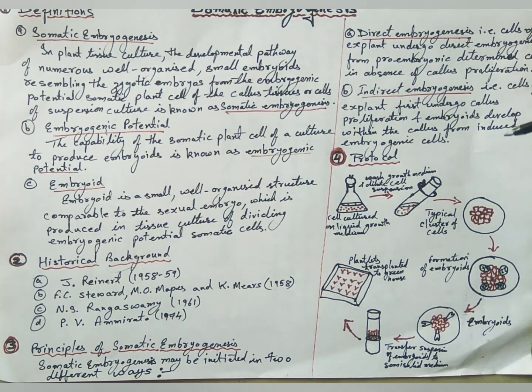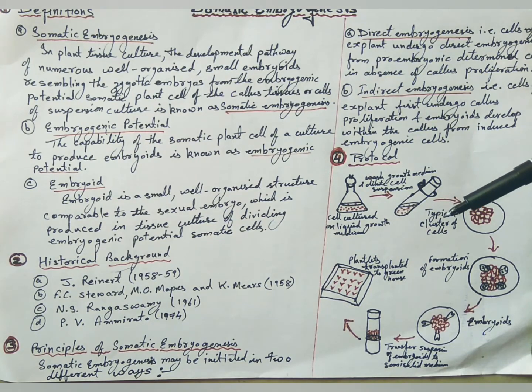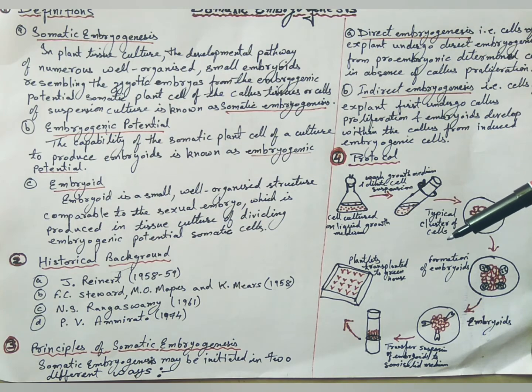Protocol: Leaf petiole or root segments from seven-day-old seedlings or cambium tissues from storage root can be used as explant. Leaf petiole and root segments can be obtained from aseptically grown seedlings. Cambium tissues can be obtained from surface sliced storage tap roots following aseptic techniques.